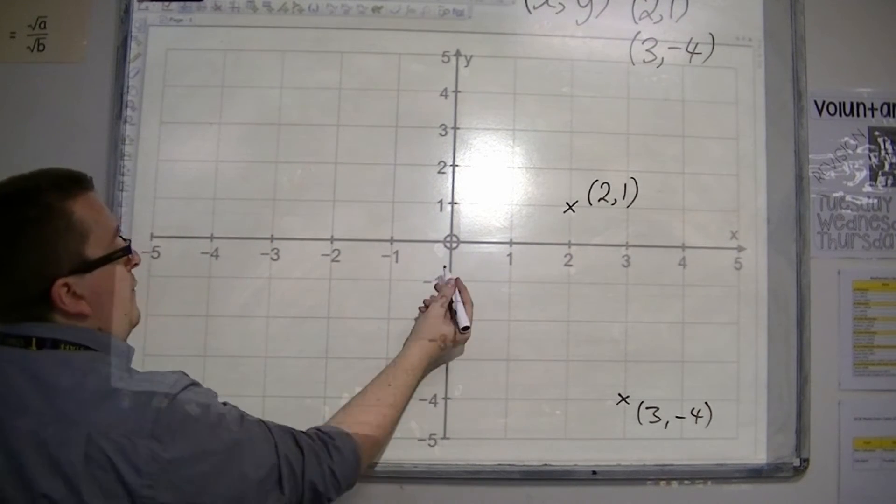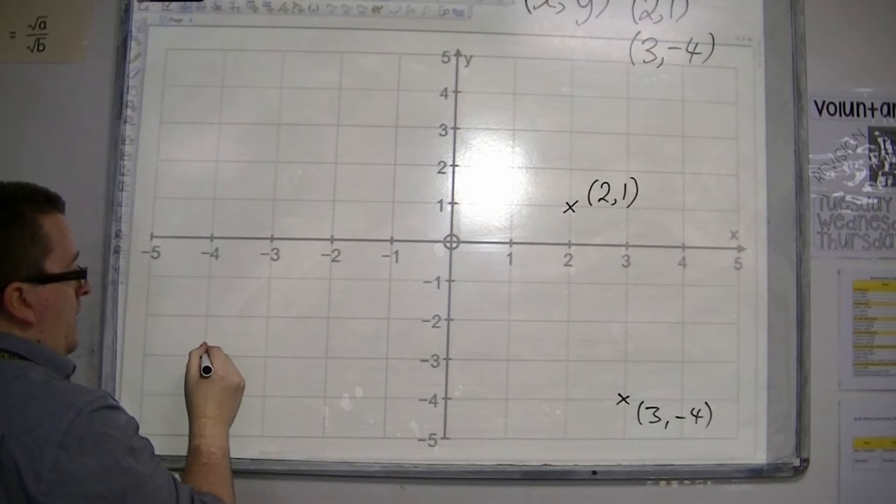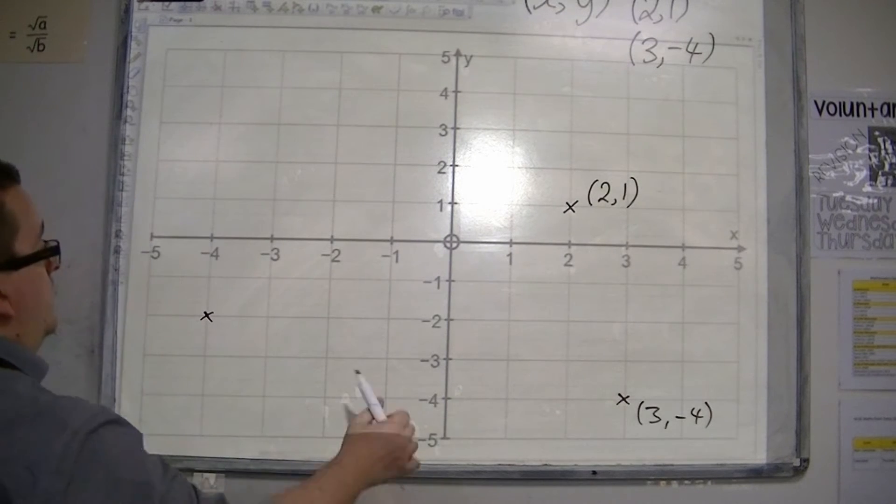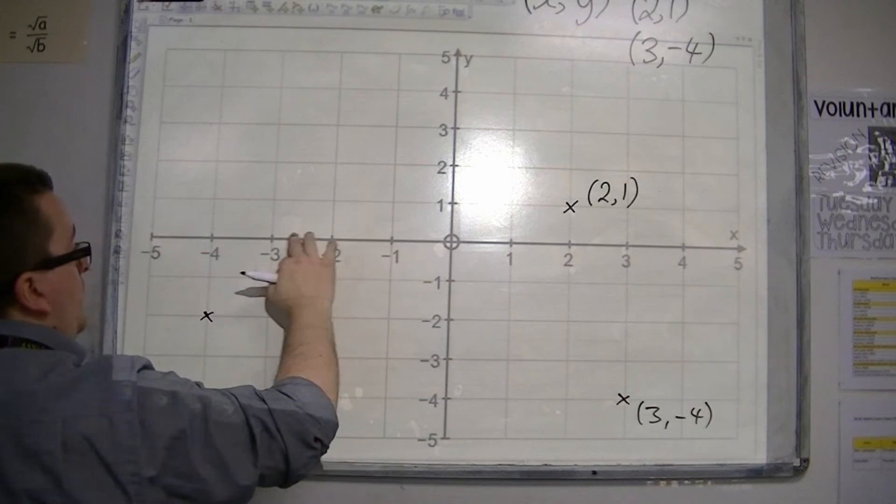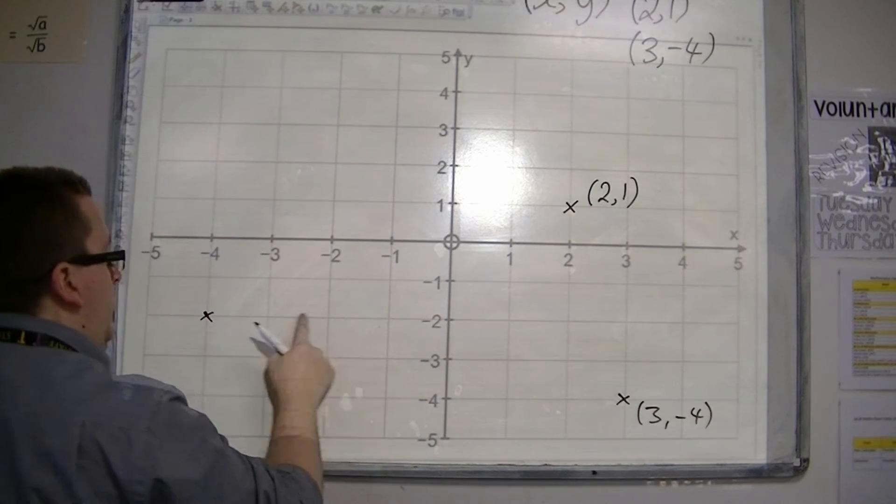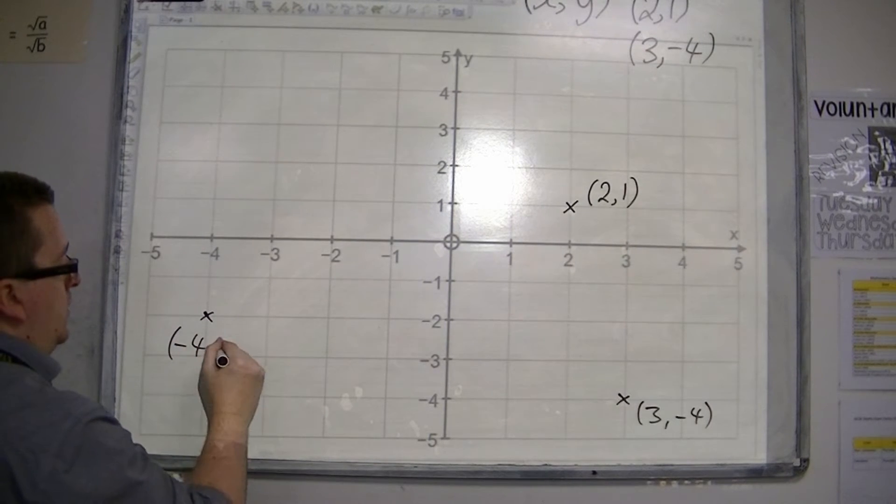So if I then chose a point, let's say there, then this coordinate has minus 4 as its x-coordinate and minus 2 as its y-coordinate. So (-4,-2).